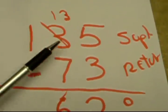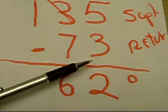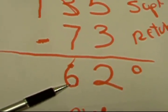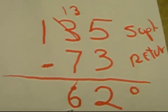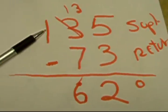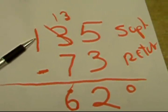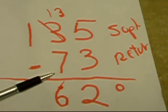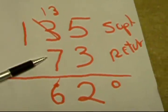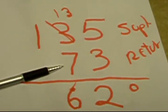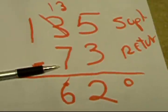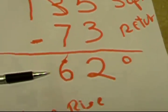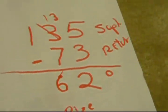So you subtract these two numbers and we came out with 62 — that's the temperature rise. Simple as that. 135 going out on the supply side, 73 coming back on the return, and the temperature rise is 62 degrees. Pretty cool!